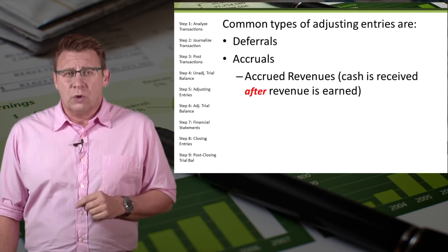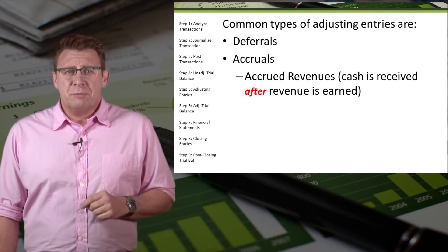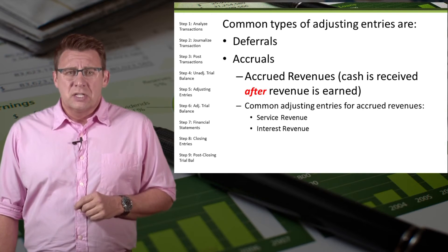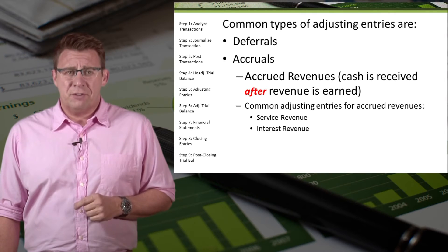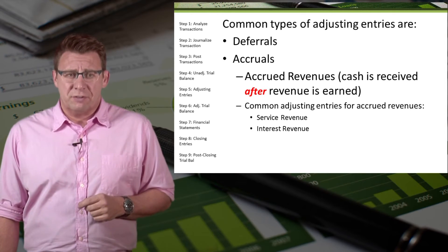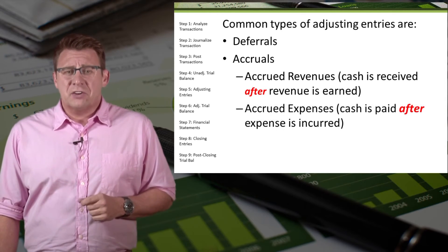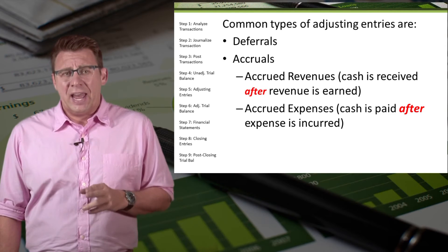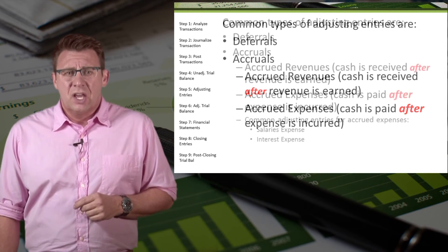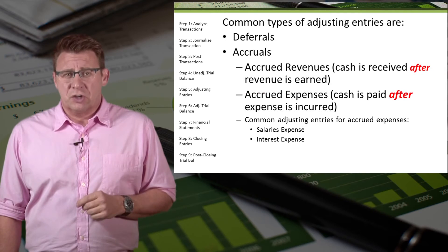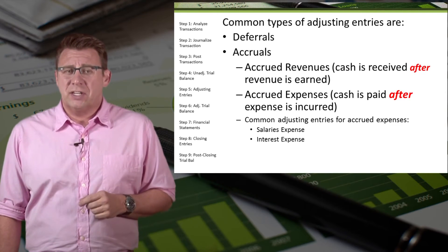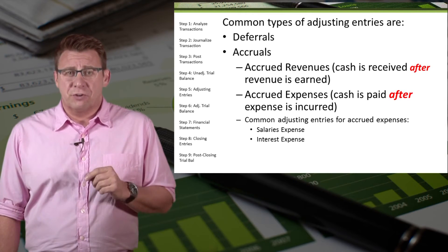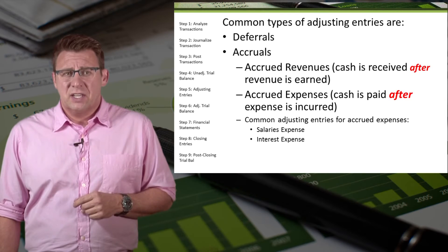One type of accrual is accrued revenues, which means that cash is received after the revenue is earned. Common examples of adjusting entries for accrued revenues are service revenue and interest revenue. Another type of accrual is accrued expenses, meaning cash is paid after the expense is incurred. Companies tend to have a lot of accrued expenses, as this is the most common adjusting entry. Common examples include salary expense and interest expense.